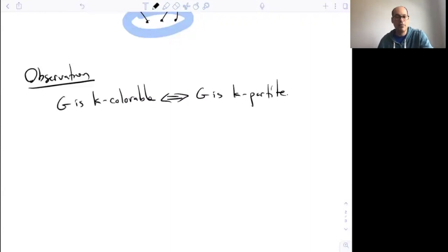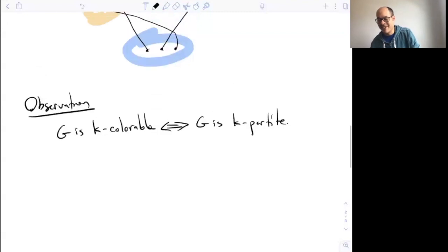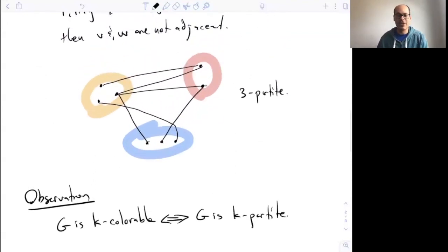The proof is really just that the definitions are actually the same if you think about it. If you look at this three-partite graph, really the point was that I can assign these vertices colors.